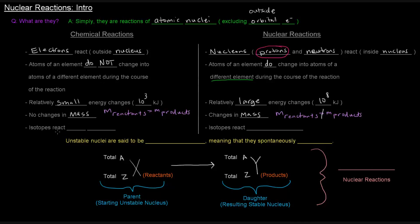Isotopes react the same way in chemical reactions because the number of electrons determines what's happening, and isotopes just have a different number of neutrons, not a different number of electrons. So neutrons have nothing to do with electron chemistry. In nuclear reactions, however, isotopes react differently because they have different numbers of neutrons, and neutrons are nucleons. If an atom has a different number of neutrons, the nucleus of that atom is different, so we can expect a different reaction.